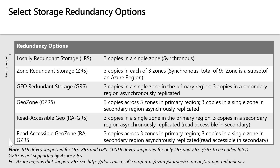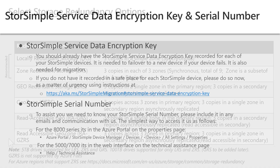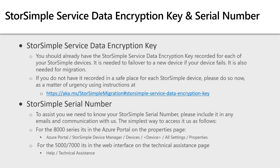We plan to support 100TB GRS shares at a later time. Your StoreSimple service data encryption key is also important and you should already have it recorded for each of your StoreSimple devices. It is needed to fail over to a new device if your device fails. It is also needed to migrate off StoreSimple. If you do not have it recorded now and stored in a safe place for each StoreSimple device, please do so now using the instructions provided at the link on this page. Please also ensure you have the serial number recorded for each device. We will need it to assist you with your migration, so please include the serial numbers in any communications with us. StoreSimple device serial numbers are simple to access and the instructions are provided on this slide.